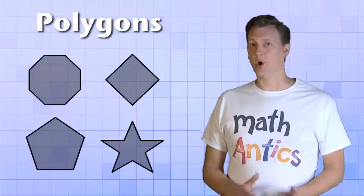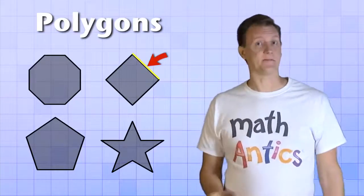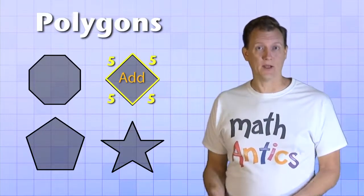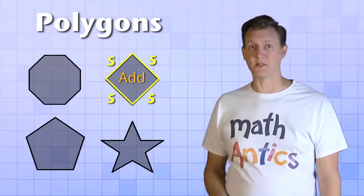Since polygons are made from only straight sides, it's easy to find their perimeter. If you know the length of each side, all you have to do is add them up, and the total length you end up with is the perimeter of the polygon. Let's try doing that with a few examples so you see how it works.